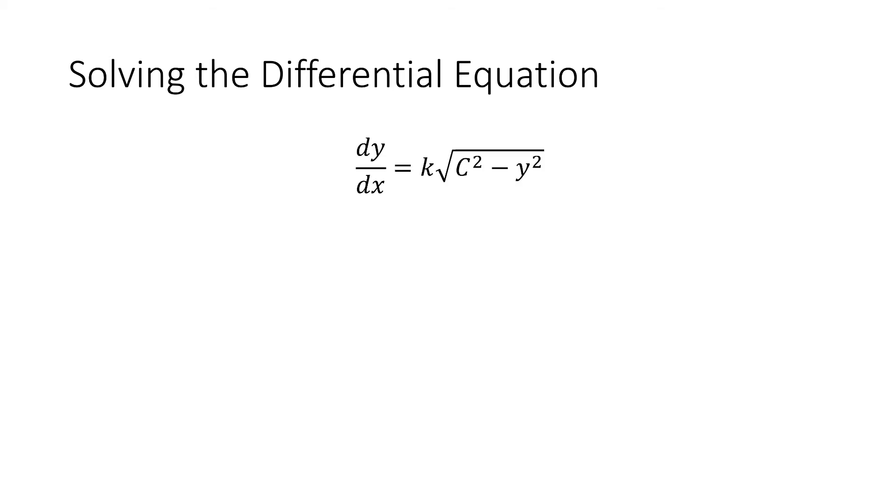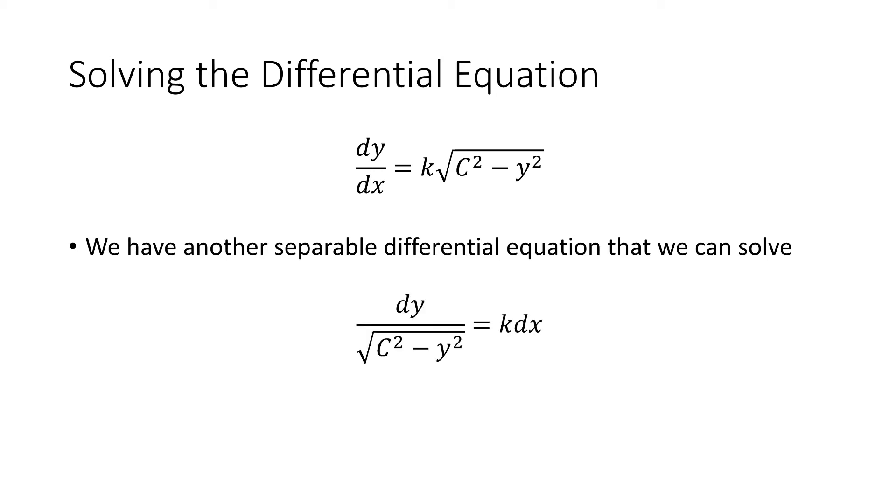So we have this and we can separate it again and solve it. In doing so on the left hand side we have dy divided by the square root of c squared minus y squared equals k dx.